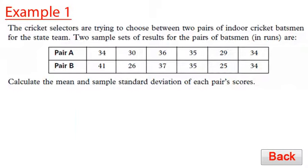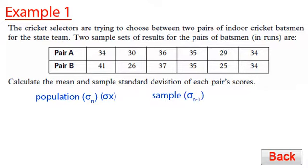We're going to learn how to calculate the standard deviation. To do this, we first need to understand there are two types: population standard deviation and sample standard deviation. The symbol for the population standard deviation is sigma n, or on your calculator, it's sigma x. The sample standard deviation has a symbol of sigma n minus 1, or on the calculator they write it as Sx. If you look above the 5 and 6 in green, you'll see these symbols on your calculator.